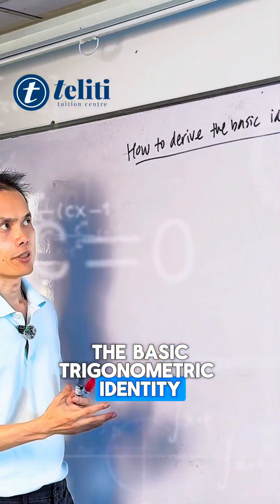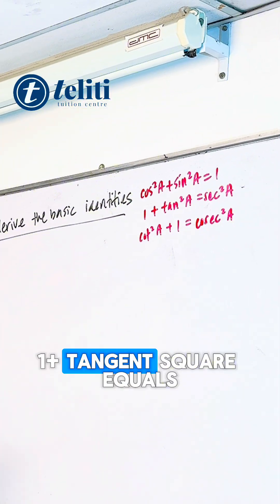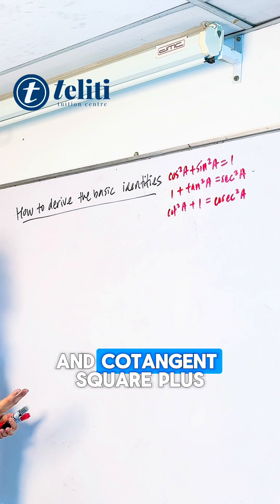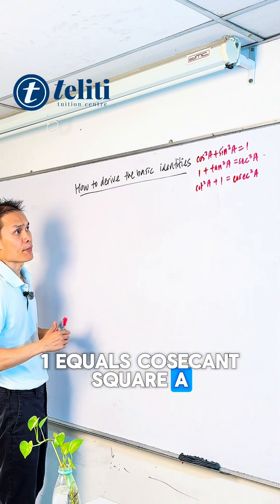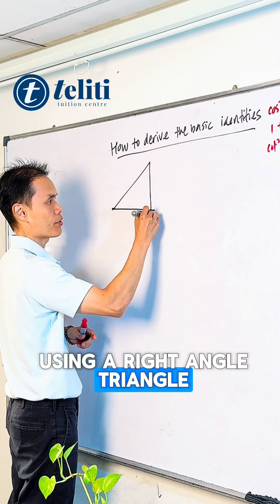How to derive the basic trigonometric identities: cos²A + sin²A = 1, 1 + tan²A = sec²A, and cot²A + 1 = csc²A. We begin by using a right angle triangle.